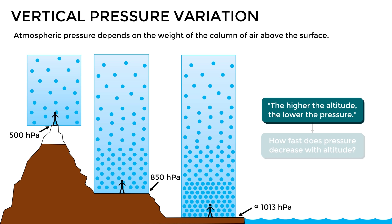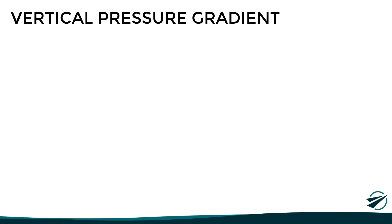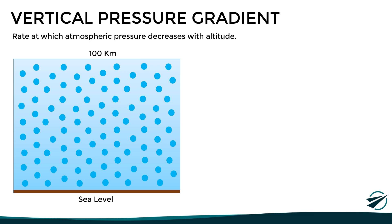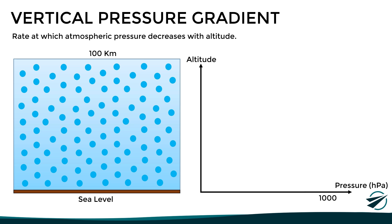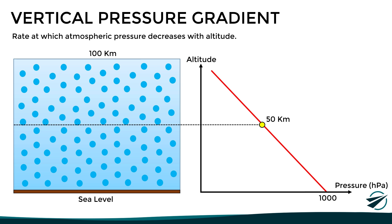But the question now is, how fast does atmospheric pressure decrease with altitude? To answer that, we have to look at the vertical pressure gradient, which measures the rate at which atmospheric pressure decreases with altitude. Since there is no defined boundary between the atmosphere and space, for this example we will assume that boundary is 100 kilometers. Taking into account that the pressure at sea level is around 1000 hectopascals, one may think that if we climb to the middle of the atmosphere — 50 kilometers — then the pressure would be half of what we had at sea level, around 500 hectopascals.